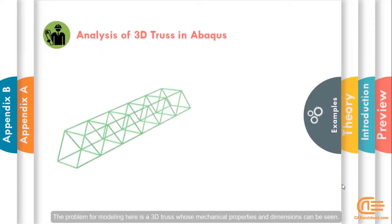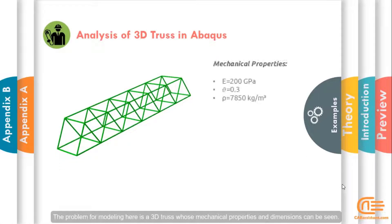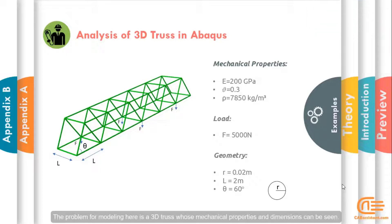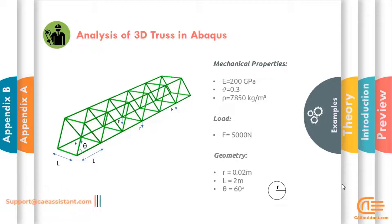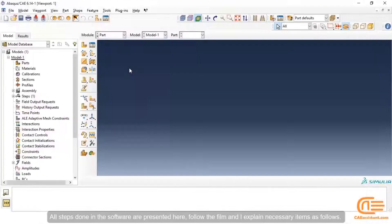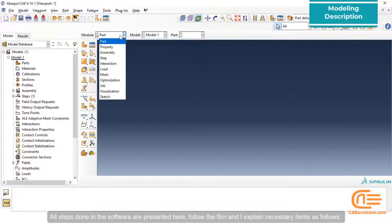The problem for modeling here is a 3D truss whose mechanical properties and dimensions can be seen. All steps done in the software are presented here. Follow the film and I explain the necessary items as follows.